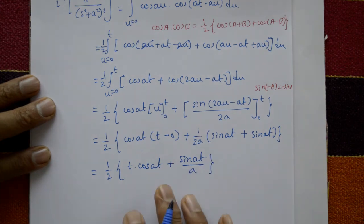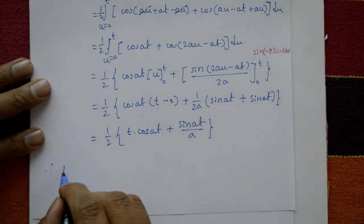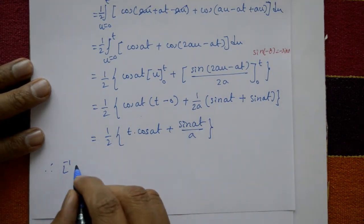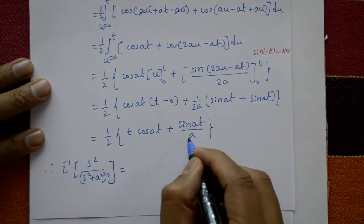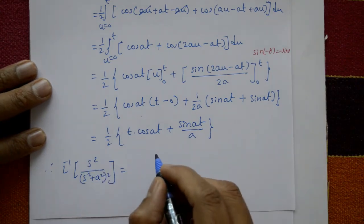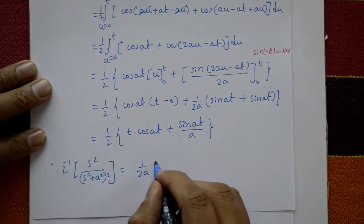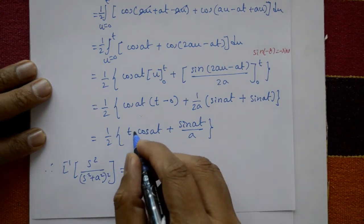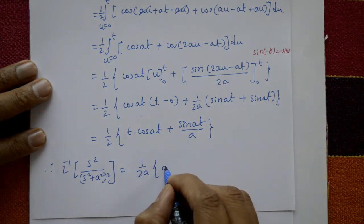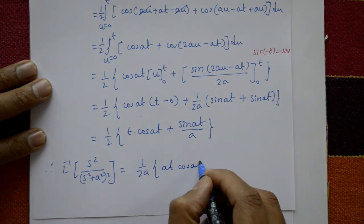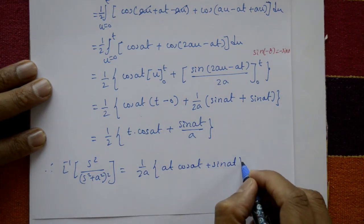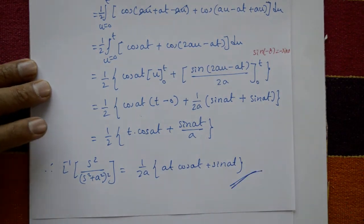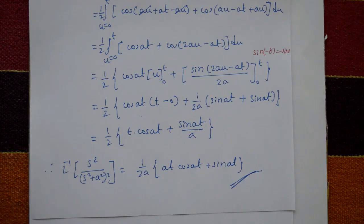Therefore, the inverse Laplace transform of s² upon (s² + a²) whole square is equal to (1/2a)[at·cos(at) + sin(at)]. This is the required solution.